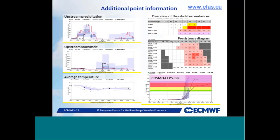Besides ensemble streamflow prediction, there are additional products the forecaster on duty can see, including upstream precipitation, snowmelt, average temperature, COSMO-LEPS ensemble streamflow prediction, the persistence diagram, and an overview of threshold exceedance to check consistency of different models for the same forecast and days.